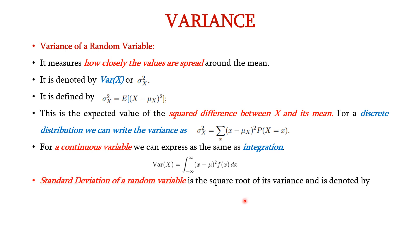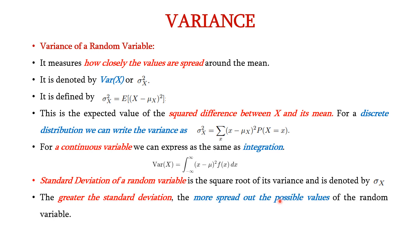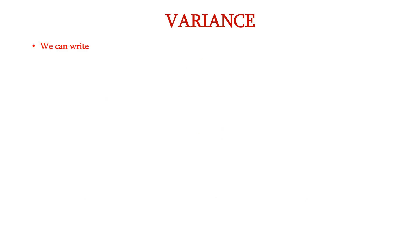Standard deviation of a random variable is the square root of its variance and is denoted by sigma x. The greater the standard deviation, the more spread out the possible values of the random variable. We can also write the variance formula E of x minus mu x whole square as variance of x is equal to E of x square minus E of x whole square.